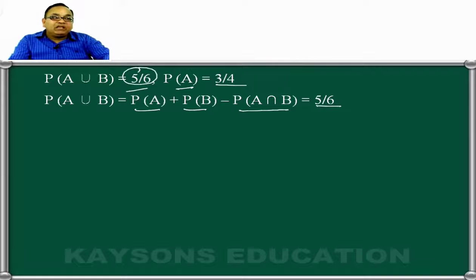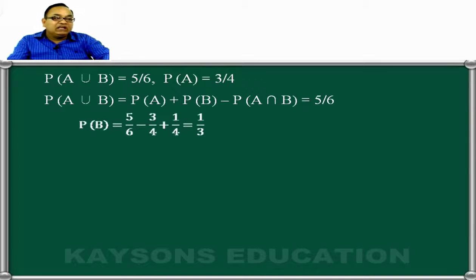A happening is how much? 3 by 4. Probability of B will be found because this value is also given to us, we will calculate from the equation. Then the probability of B is nothing but 1 by 3.